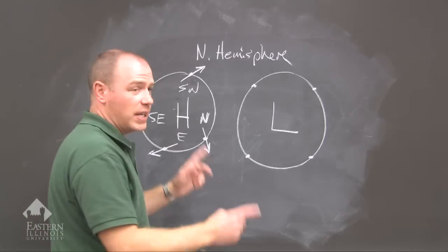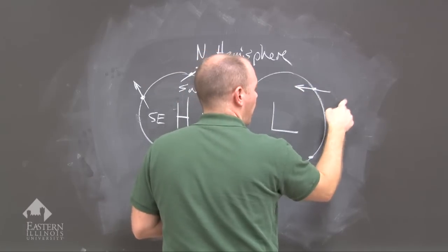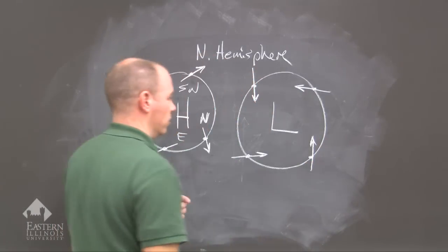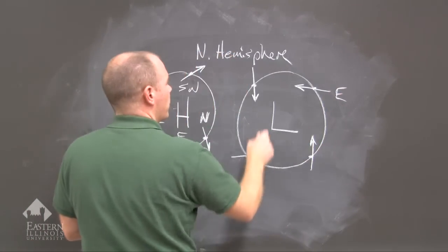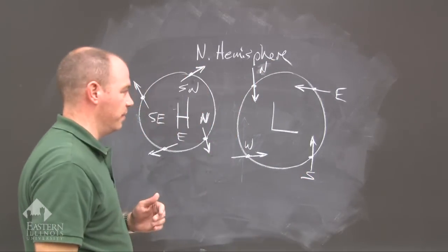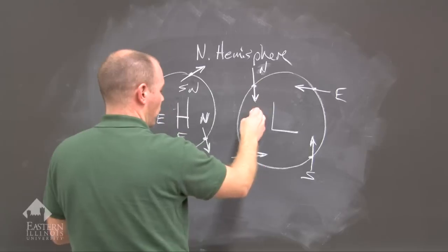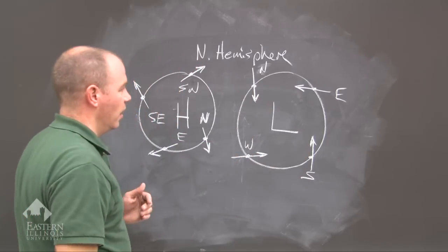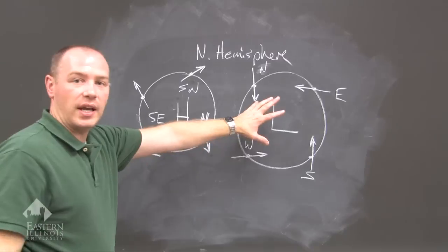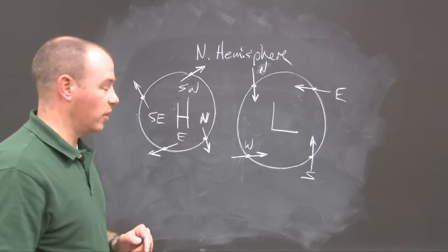Now let's go to the low pressure. In this case, winds go from high to low, so at 45-degree angles winds flow from higher to lower pressure into the low. Winds here are from the east, from the north, from the west, and from the south — all crossing isobars at 45-degree angles. The winds are going from higher pressure to lower pressure, coming into the low pressure cell. So the low pressure has winds that spiral inwardly, counterclockwise.